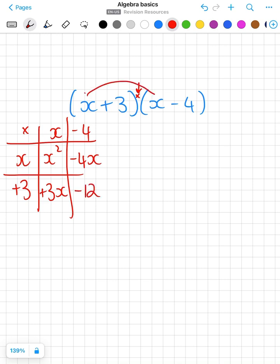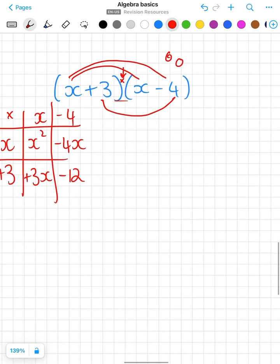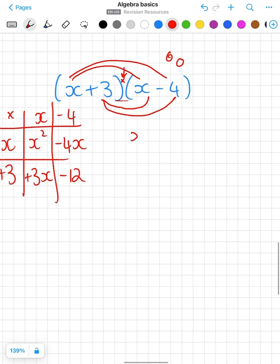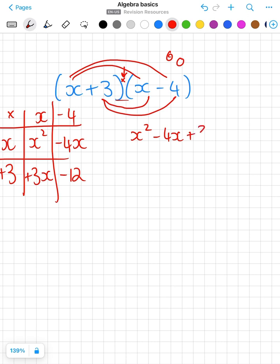Or we can use our parrot method because apparently it looks like a parrot. So x times x, we follow our arrows, x squared, x times minus 4, minus 4x, 3 times x is plus 3x, and 3 times minus 4 is minus 12. Collect your like terms and we've simplified.